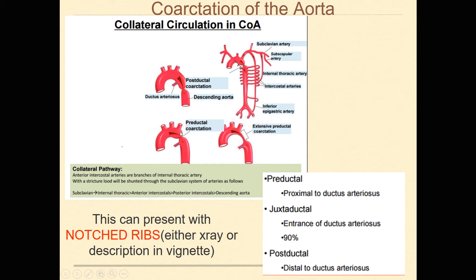Then there's pre-ductal, which is before the ductus arteriosus. And then there's juxtaductal, which is right at the level of the ductus arteriosus. You can also have extensive pre-ductal coarctation, which is just a very long segment — not just one small segment.